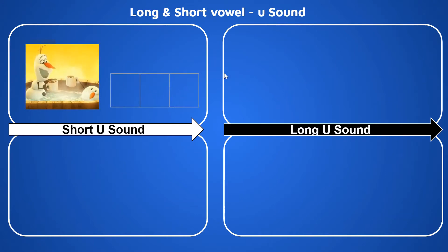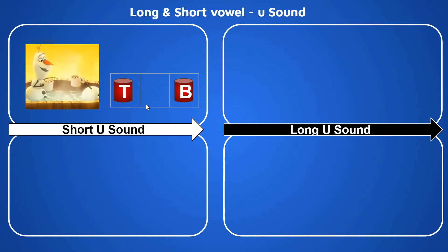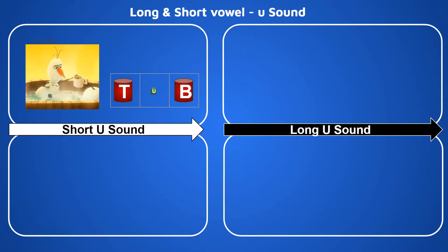Look, they are taking a bath in a tub. What is the beginning sound of 'tub'? That is T. What is the ending sound of 'tub'? That is B. So what is the middle sound? Let's try: T, 'uh', B. The middle sound is 'uh'. What makes the phonetic sound 'uh'? Alphabet U.